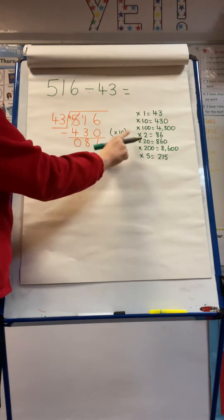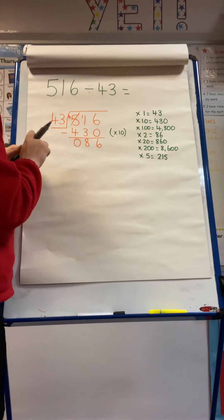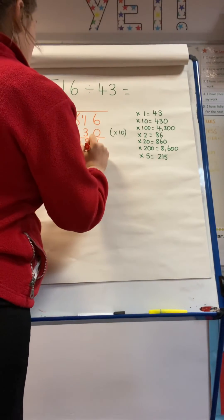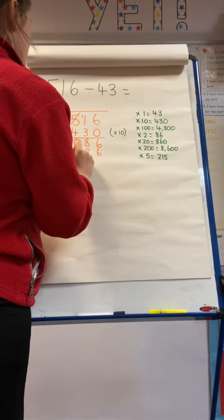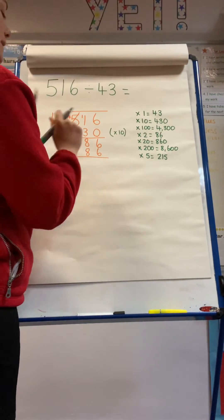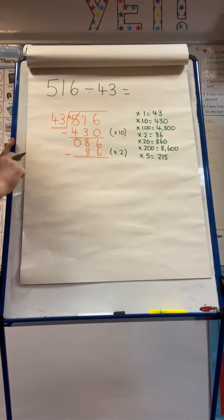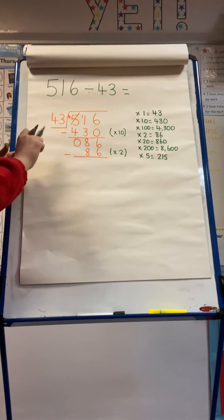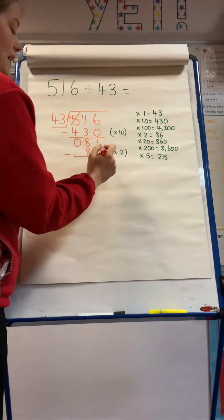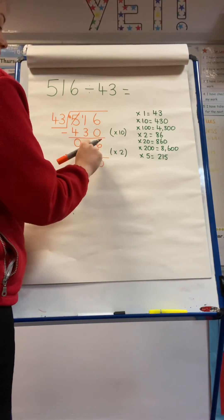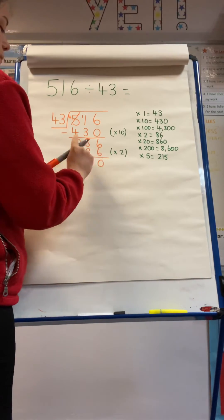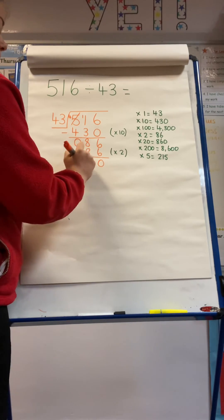So having a look, I know that 43 times 2 is 86. So I'm now going to do 86 subtract 86. Again, put my times 2 in brackets next to it so I know what I multiplied 43 by to get my answer. 6 subtract 6 is 0. 8 subtract 8 is 0. 0 subtract nothing is 0.